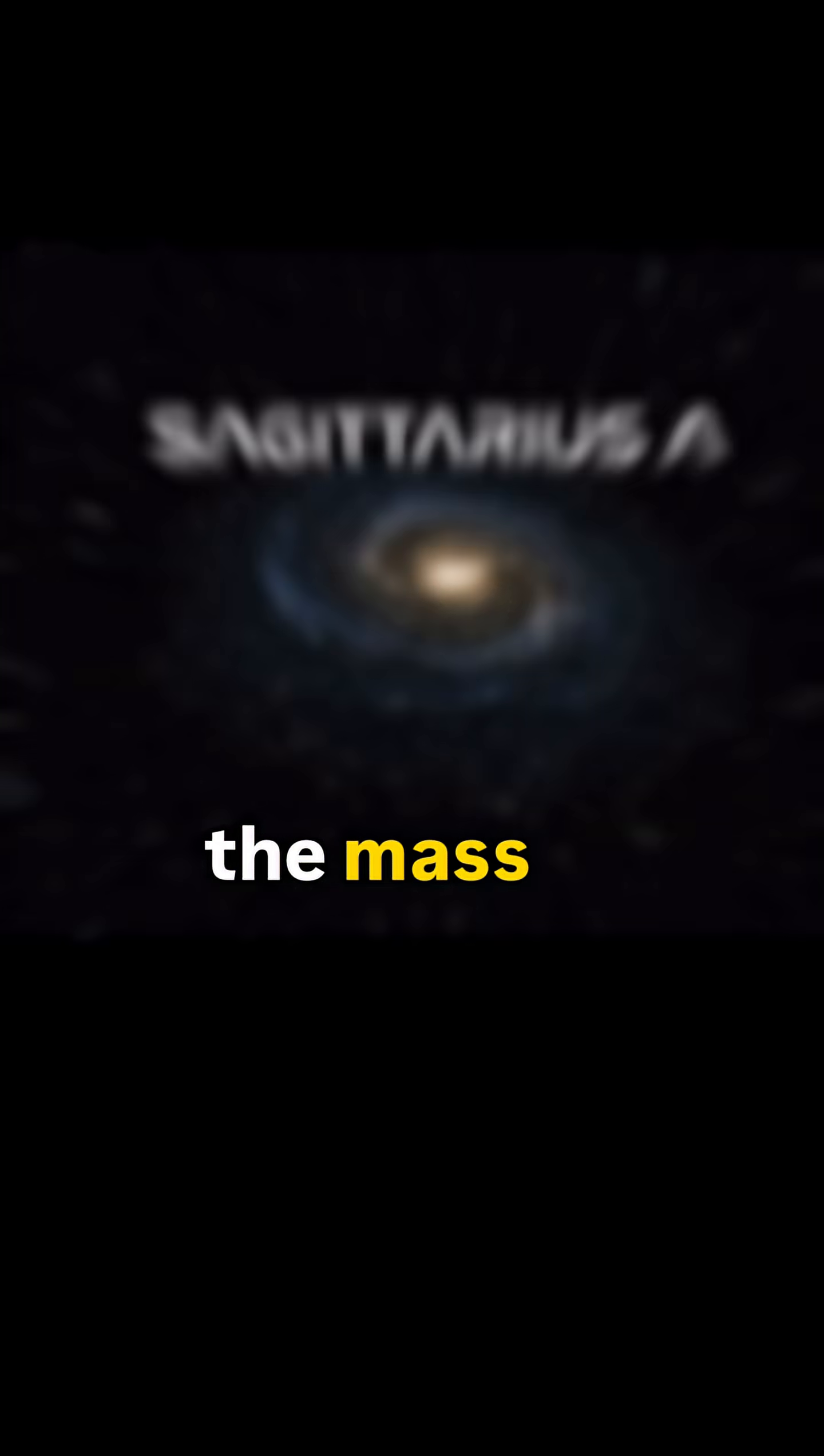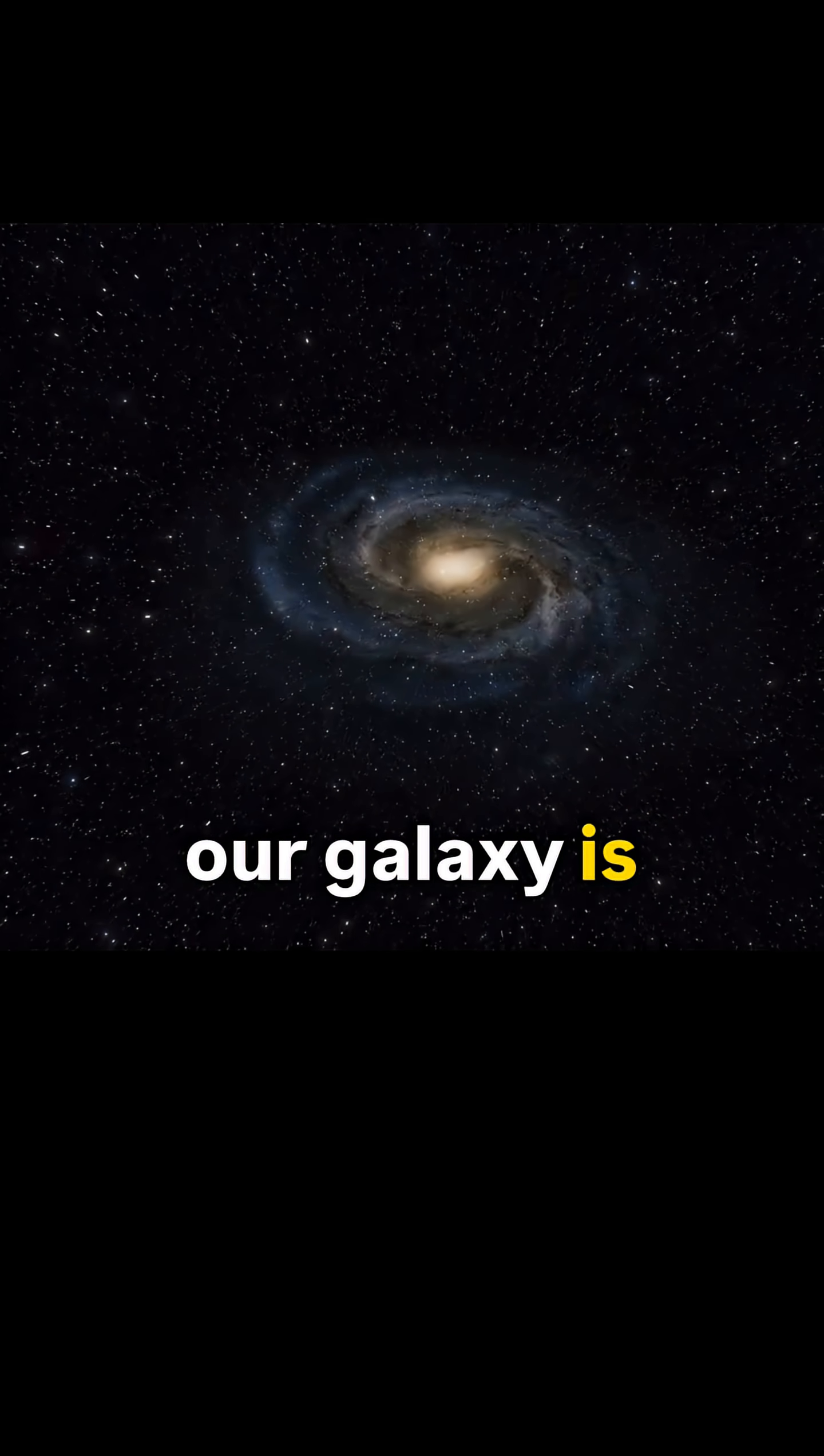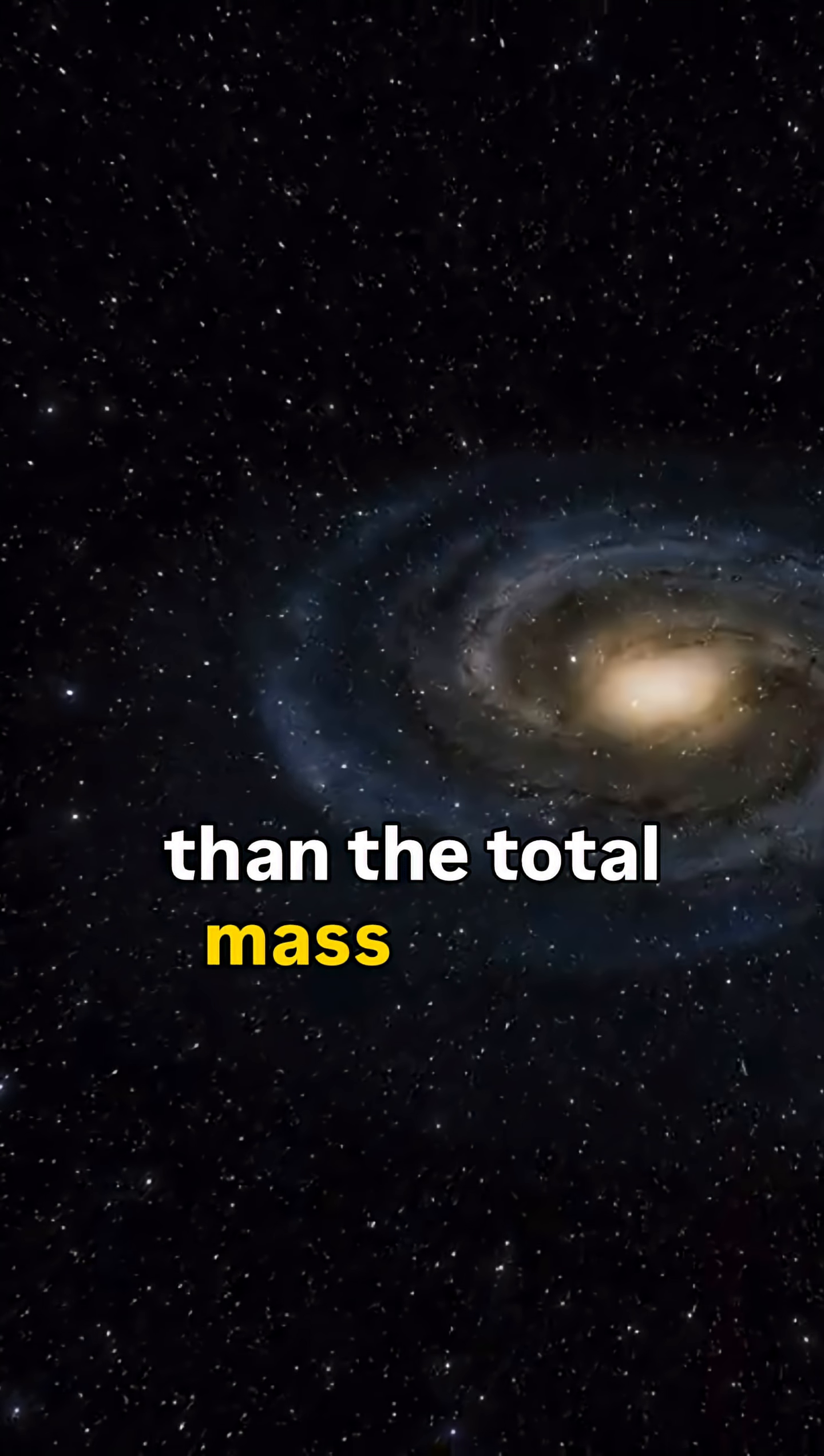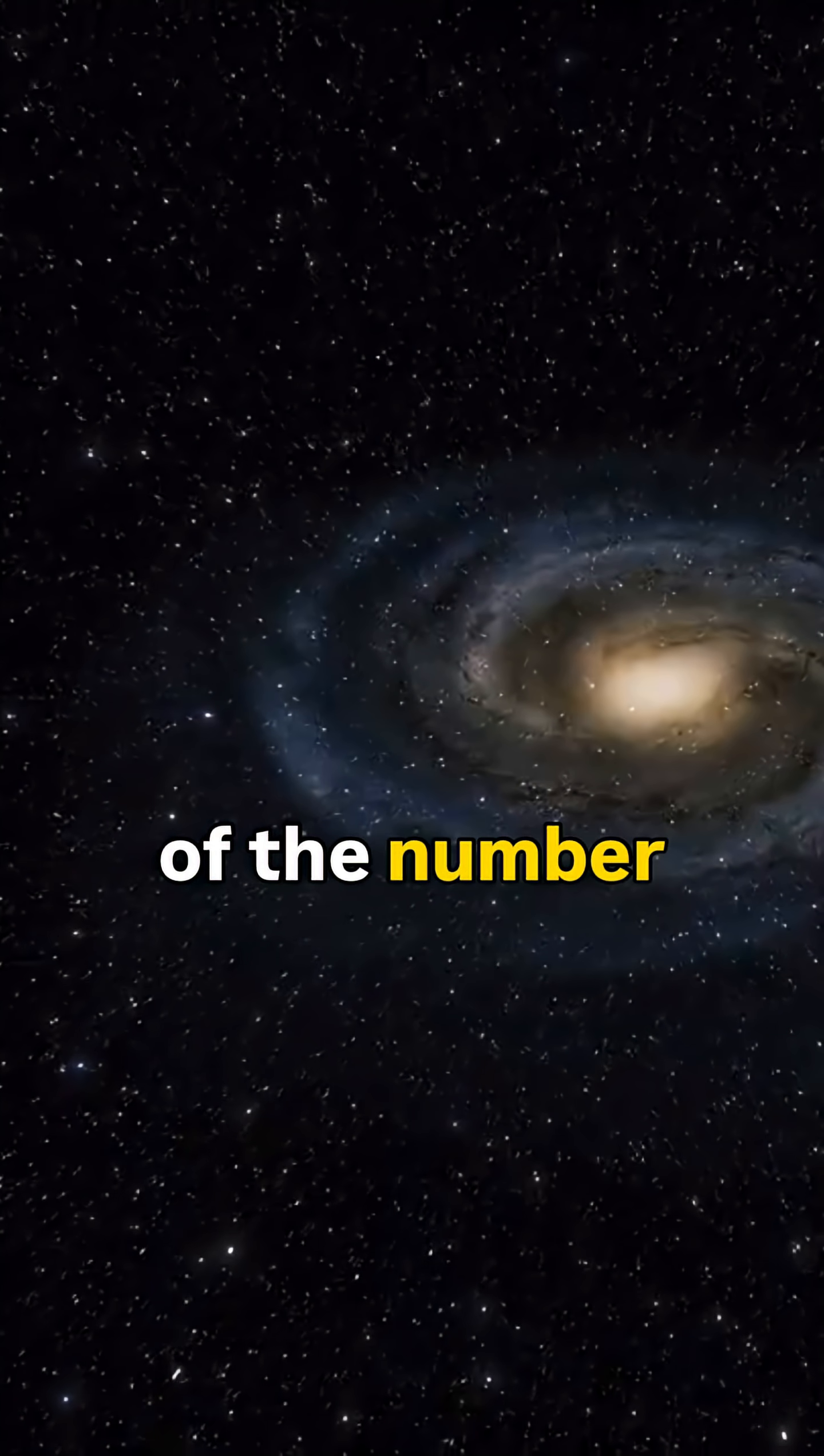For example, the mass of Sagittarius A, the black hole in the core of our galaxy, is approximately three hundred thousand times less than the total mass of the stars in the galaxy, based on the lowest estimate of the number of stars.